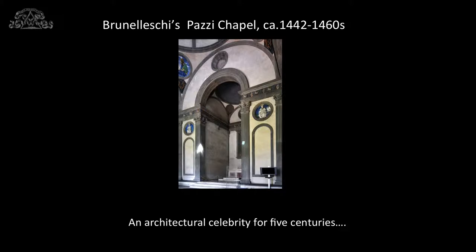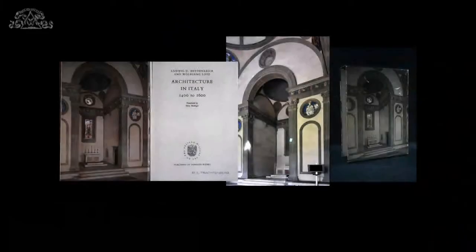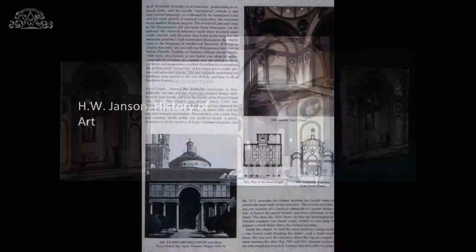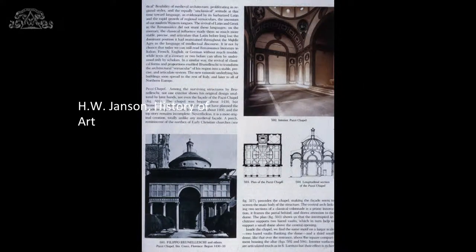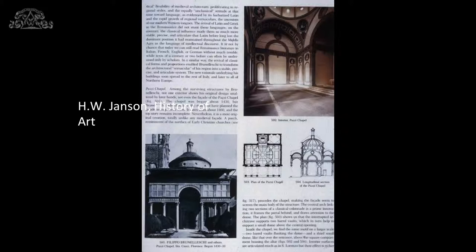The building I begin with is the Pazzi Chapel in Florence. Prior to my research, it was regarded as the defining work of Filippo Brunelleschi. It was emblematic of the entire Renaissance movement and considered a high point in architectural history. The chapel was made the frontispiece of the Heidenreich-Lotz volume of the canonical Pelican history of architecture in its original 1970s edition. The chapel received VIP treatment everywhere, as you see here in Janssen's history of art, where it is allowed an exceptional four images.